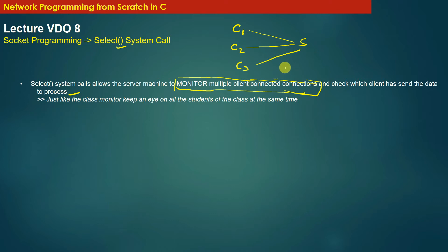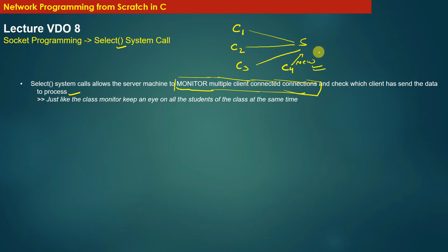In addition, suppose there is a client C4 which is not connected to the server S but sends a new connection initiation request to the server S. Using the select system call, the server S can not only monitor existing connected clients but can also monitor new connection initiation requests sent by new clients to the server. So the select system call is used to monitor multiple file descriptors.